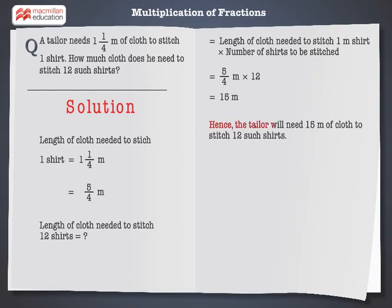Hence, the tailor will need 15 meters of cloth to stitch 12 such shirts.